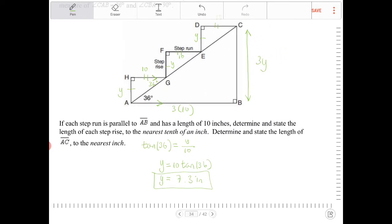So since we have Y already figured out, then 3Y will be 3 times 7.3. And that would be 21.9 roughly. So we have 21.9 and this is 30.